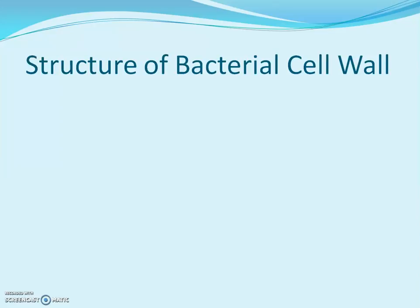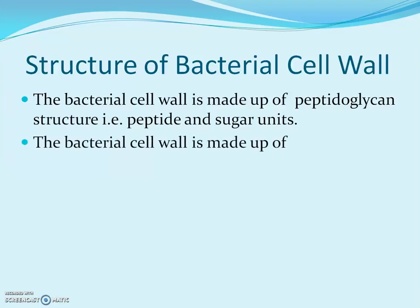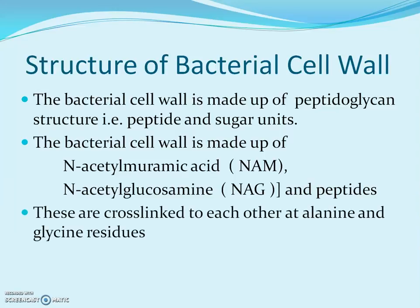The bacterial cell wall is made up of a peptidoglycan structure consisting of peptide and sugar units. It contains two different types of sugar units: N-acetyl muramic acid, commonly known as NAM, and N-acetyl glucosamine. Peptides are attached to these sugars and are cross-linked to one another at alanine and glycine residues to form peptidoglycan, which provides strength and rigidity to the bacterial cell wall.